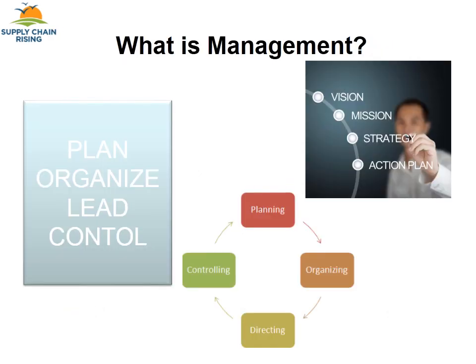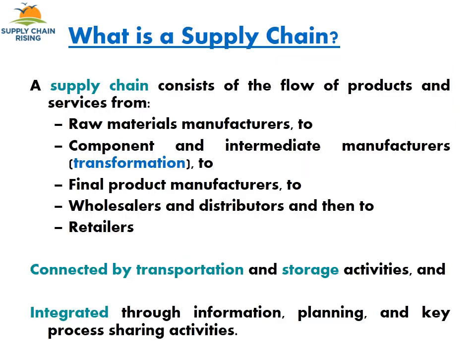Now, what is management? Most of you must be aware that there are different pillars or functions of a good manager: planning, organizing, leading, staffing, and controlling. All these functions of management must be applied in each and every section or department related to supply chain management as well. You should have a vision, a mission, and a strategy to achieve the objectives, and finally an action plan to execute everything.